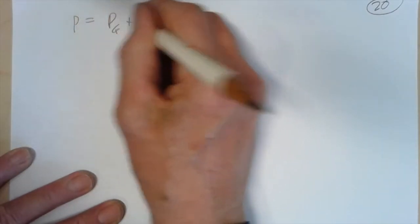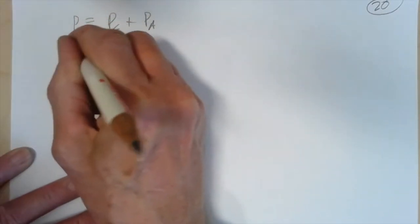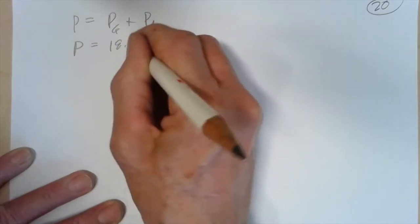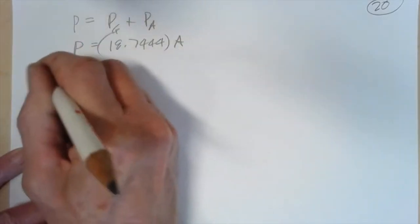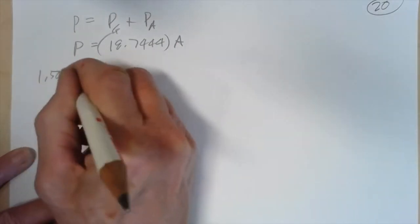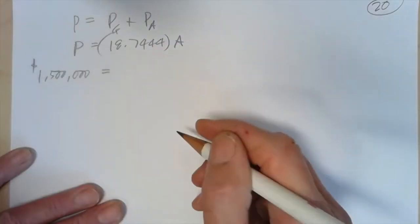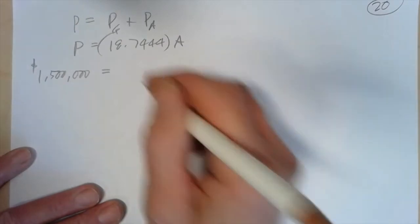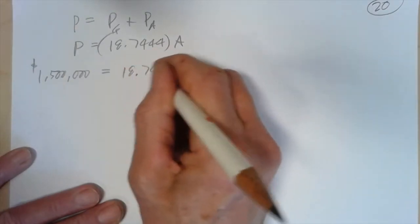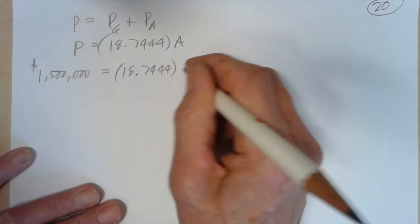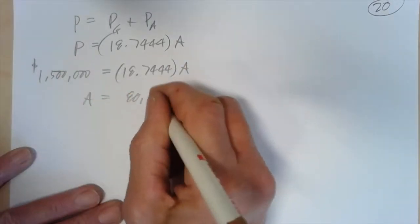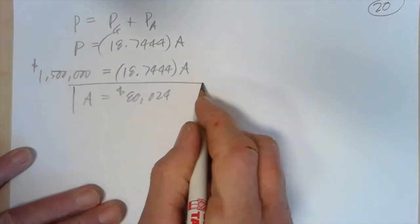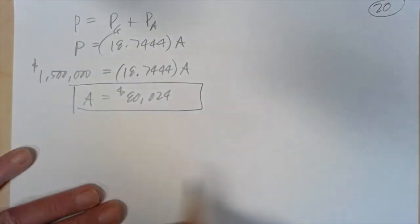So remember, P is equal to P sub G plus P sub A. P is 18.7444A. P is 1,500,000 equals 18.7444A. So in other words, A is $80,024.